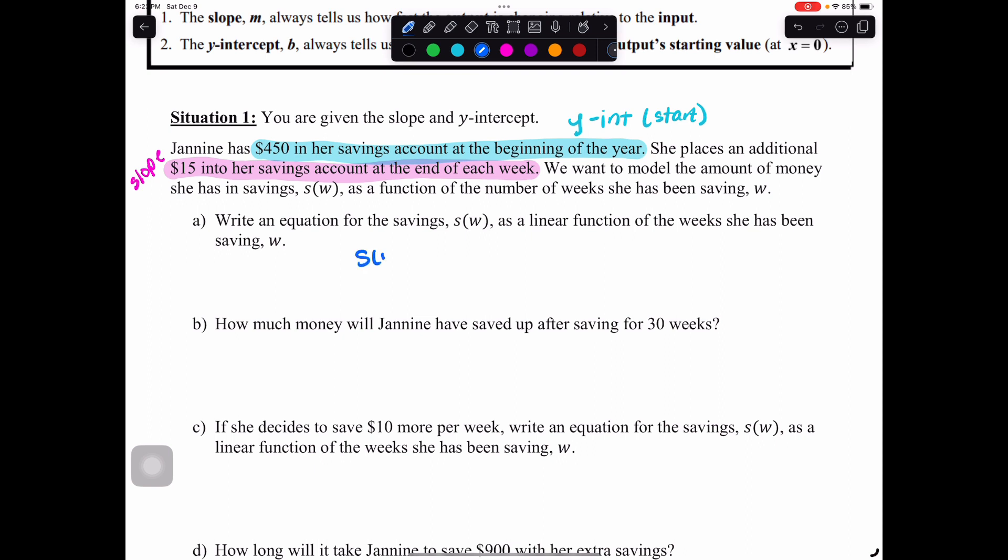So now we have what we need to write our equation, our slope and our y-intercept. So s of w, which is where we usually put y, but we're using function notation, is equal to our rate of change or slope, which is $15 per week, times w, plus the $450 she had to start. We were able to read that real world situation and pick out from the problem what we needed.